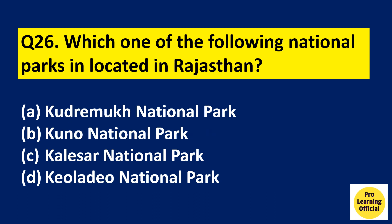Question number 26: Which one of the following national parks is located in Rajasthan? Kudremukh National Park is part of Karnataka. The right answer is Option D, Keoladeo National Park, because it is located in Rajasthan.